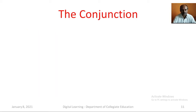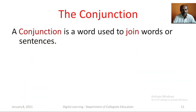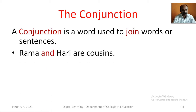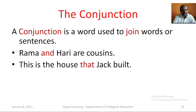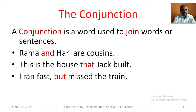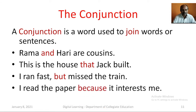The Conjunction. A conjunction is a word used to join words or sentences. For example: Rama and Hari are cousins. This is the house that Jack built. I ran fast but missed the train. I read the paper because it interests me. Here, the conjunction 'and' joins the two words Rama and Hari. The other conjunctions join two sentences.